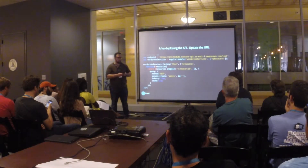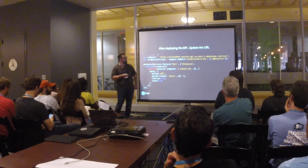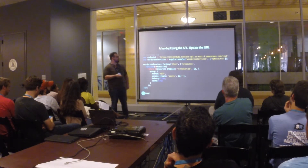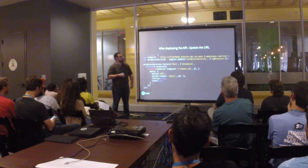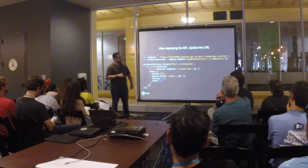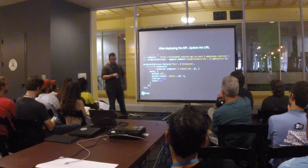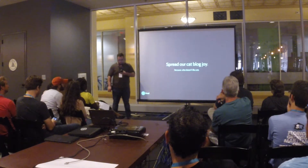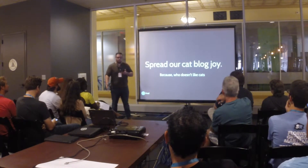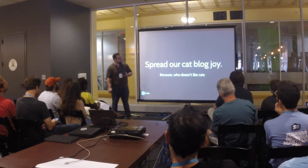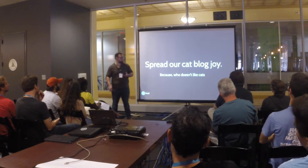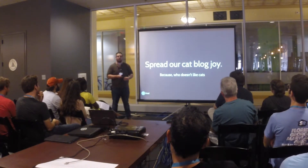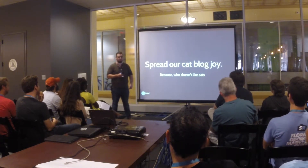Back to our AngularJS application — just updating the endpoint to use the Amazon API Gateway. And that's all we have to do. And we can now serve our cat blog, because who doesn't like cats? Clearly I was writing this at 3am.